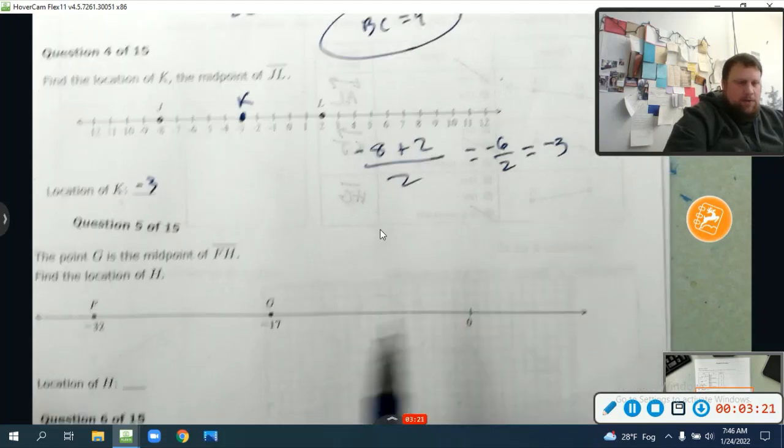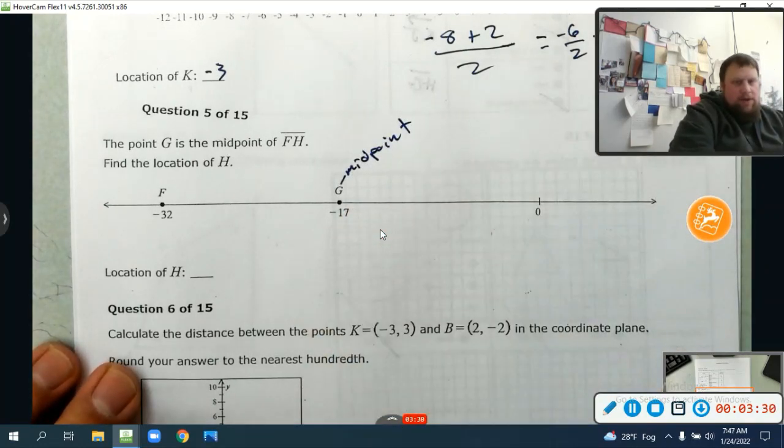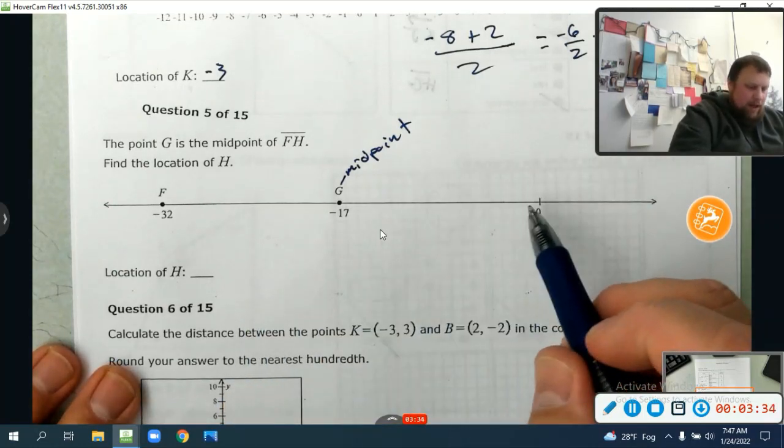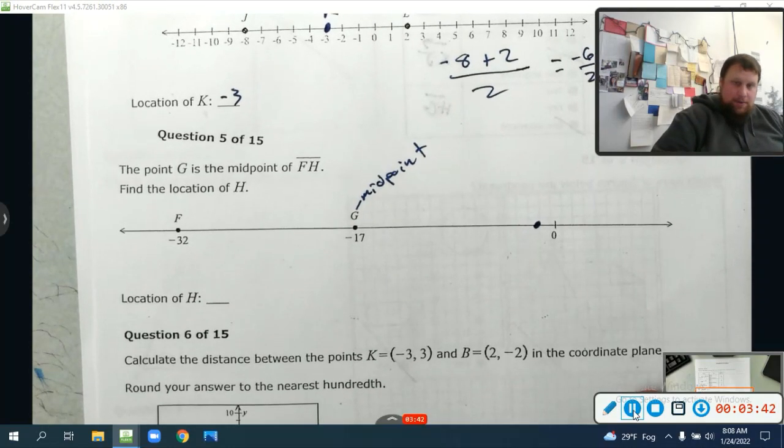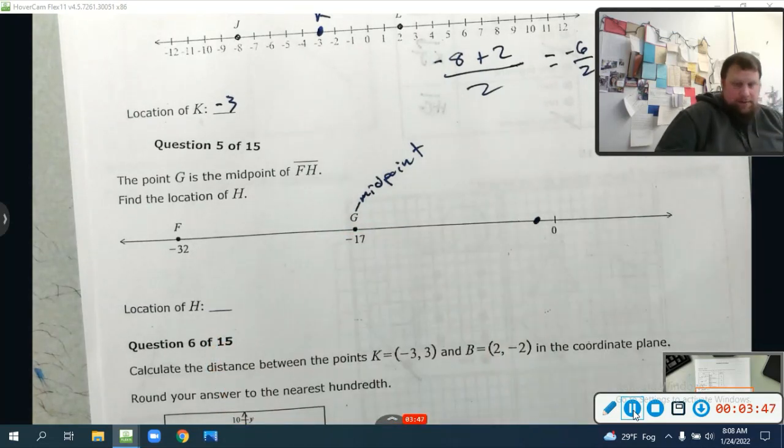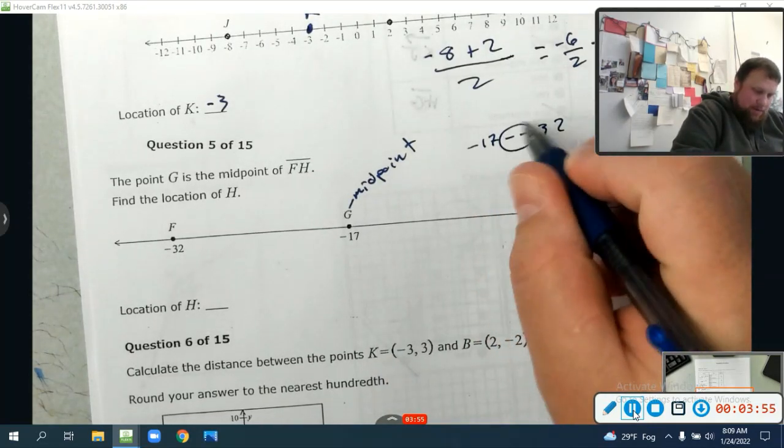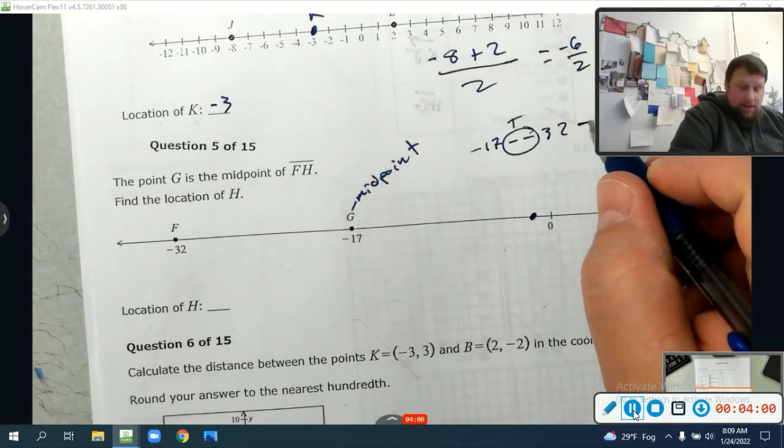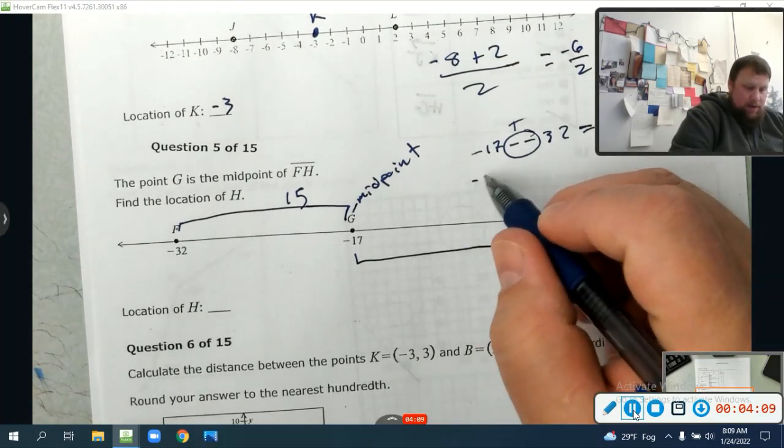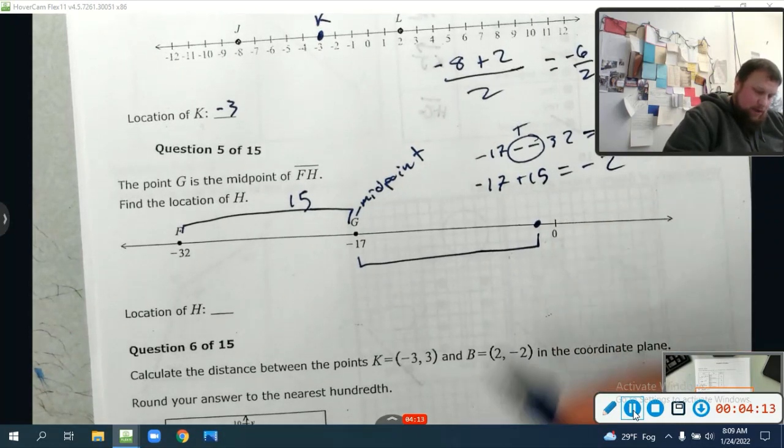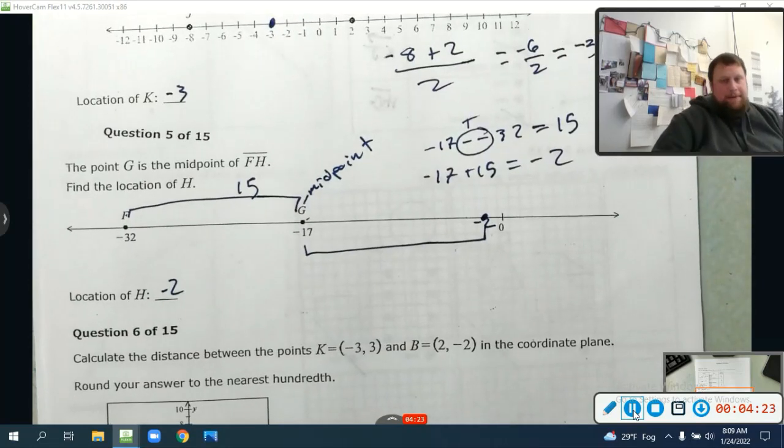Now this question often got confused with this question where it says the point G is the midpoint of FH. Find the location of H. We're not looking for some point in between, we need to find H which is somewhere over here. So to find between negative 32 and negative 17, I'm going to say negative 17 minus negative 32, which becomes a plus. Negative 17 plus 32 is 15. So there's a difference of 15 here. So I just need to add 15 to negative 17. Negative 17 plus 15 equals negative two. So H is negative two because those are each 15 away.